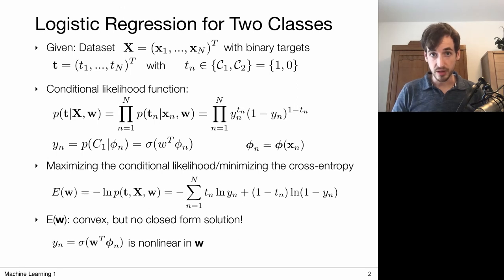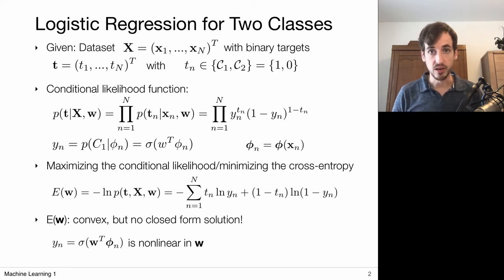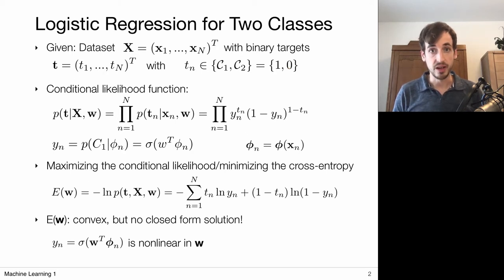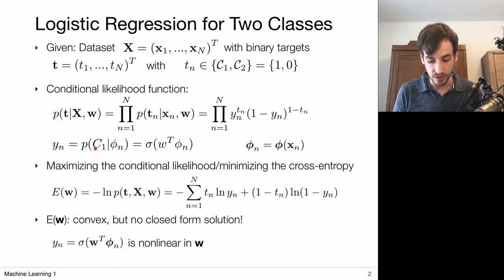Let's quickly go over the logistic regression setting. We have a dataset of input-output pairs where I'm considering binary targets — a two-class classification problem — which means I can code my targets with binary labels, a 1 or a 0. This 1 and 0 coding allows me to select the proper model, so instead of specifying for each class separately a posterior probability distribution, so separately for class 1, the probability after observing my data.